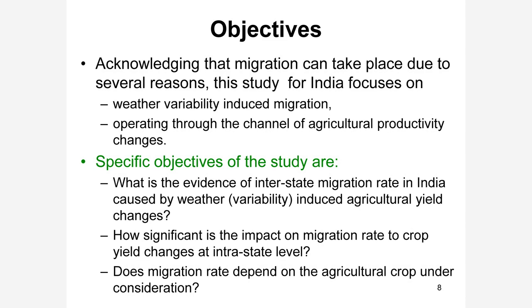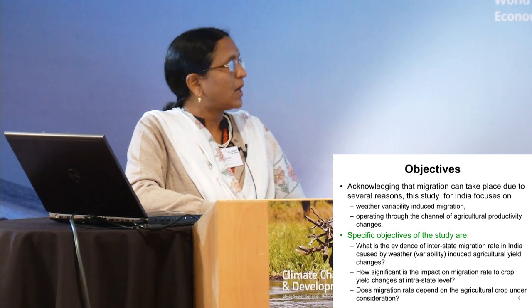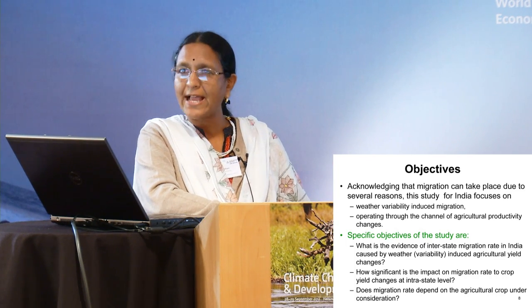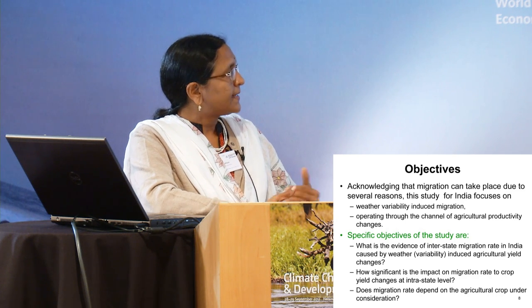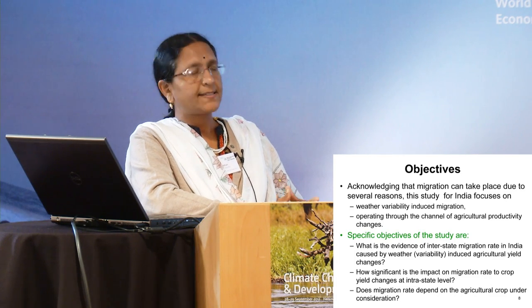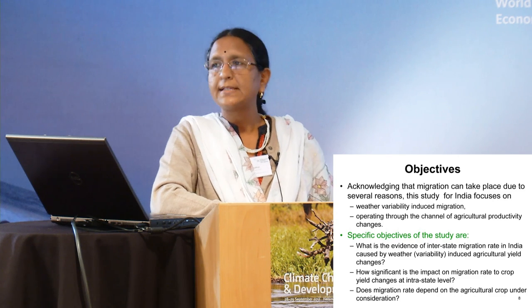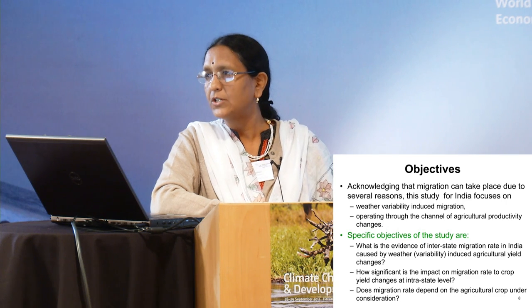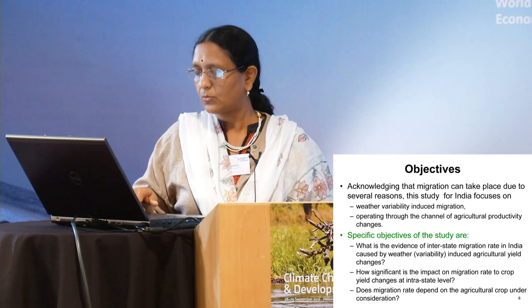Understanding that several reasons can trigger migration in a developing country, we are focusing on weather variability-induced migration operating through the channel of agricultural productivity changes. Focusing on the nature of information available, we have this specific objective: to look at interstate migration, where states are provinces in the Indian context — administrative boundaries distinguished on the basis of languages — and at a second level to look at districts within each of those states at an intrastate level, because there is larger variability in information and differences in crop choices.